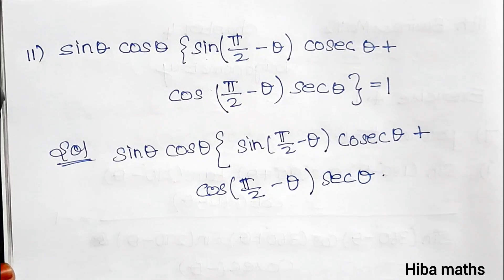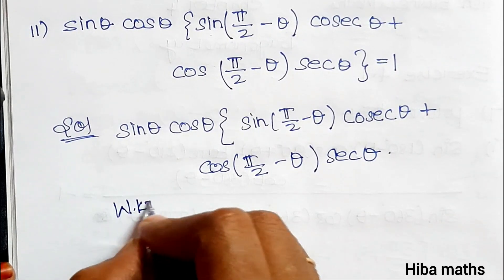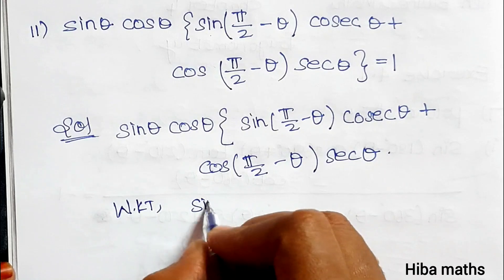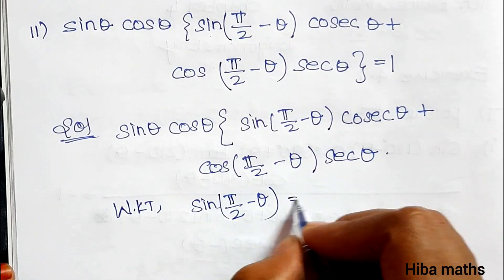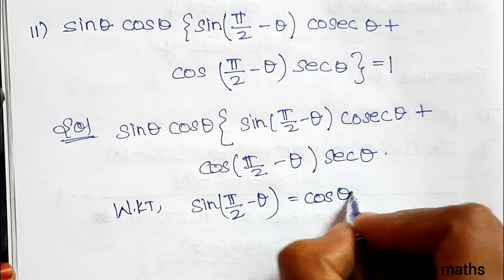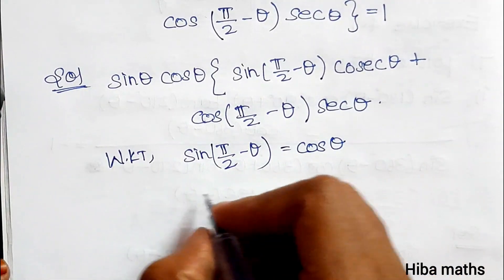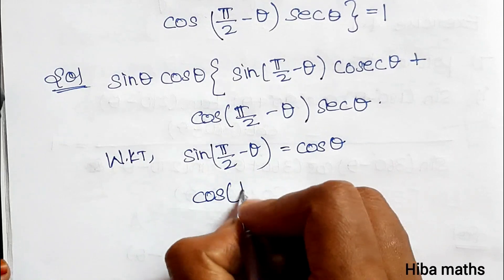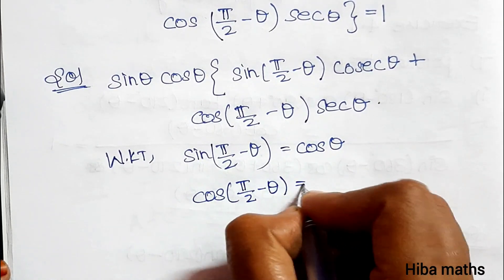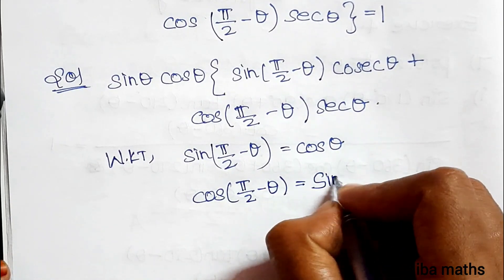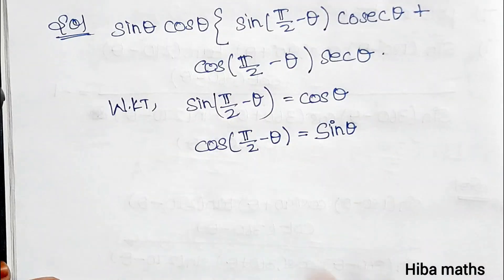We solve the LHS. We know that sin(π/2 − θ) = cos θ and cos(π/2 − θ) = sin θ. So we substitute these values and write the next line.